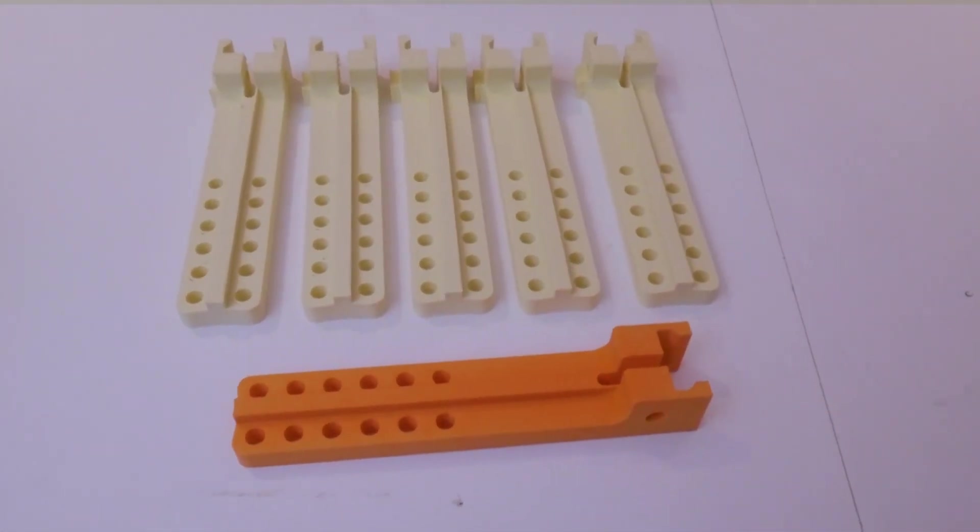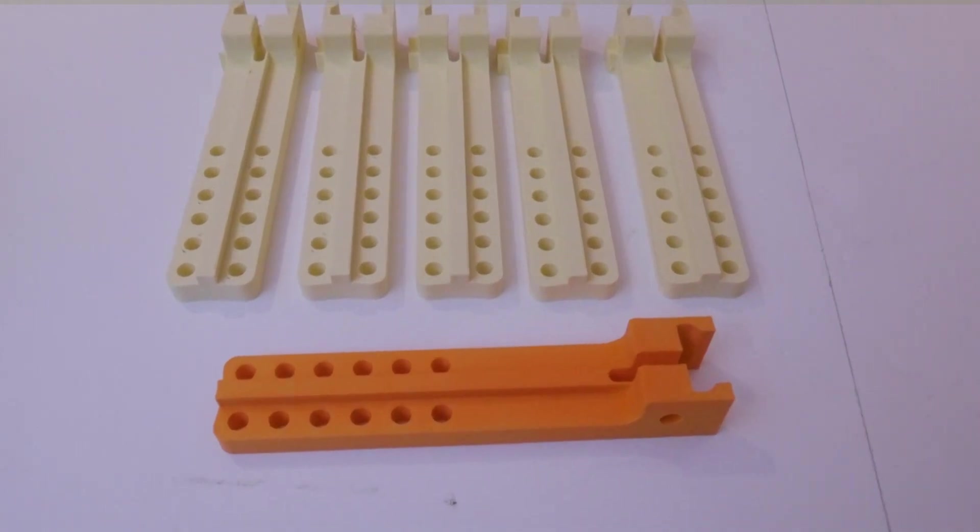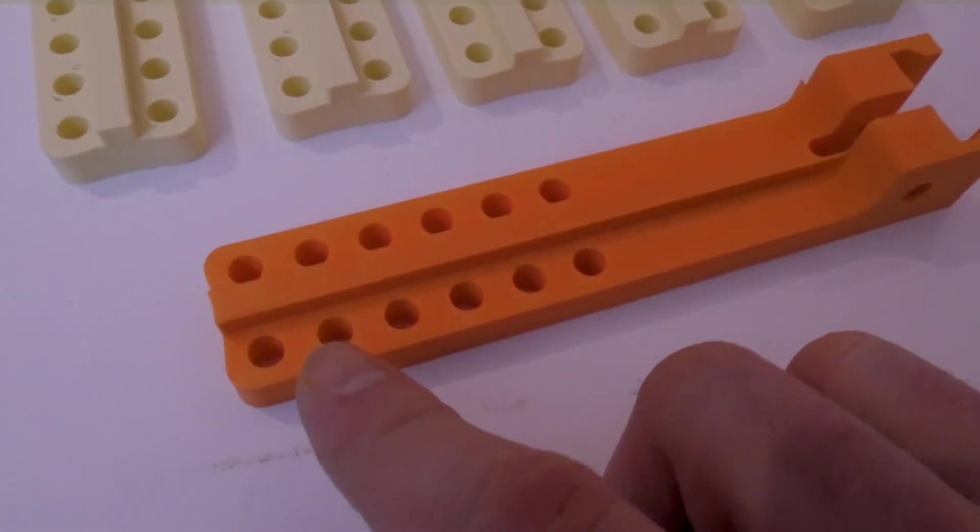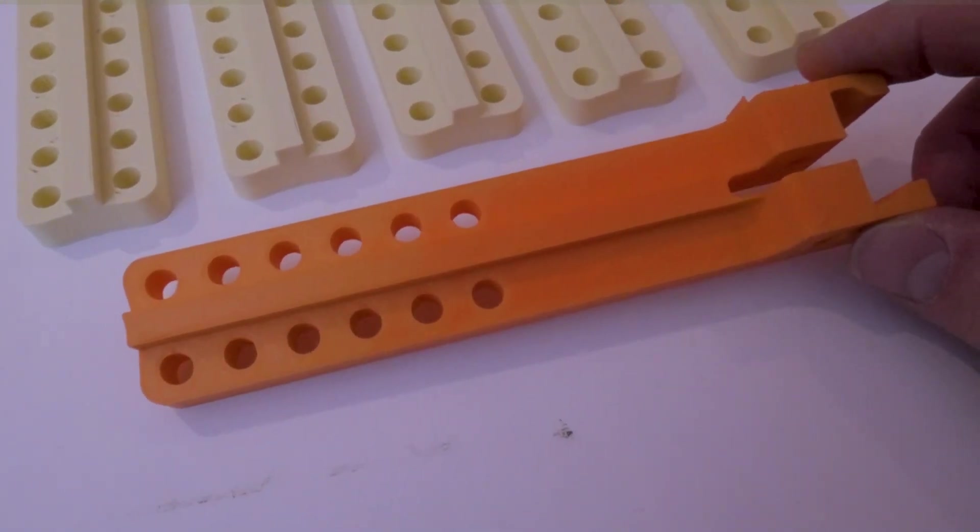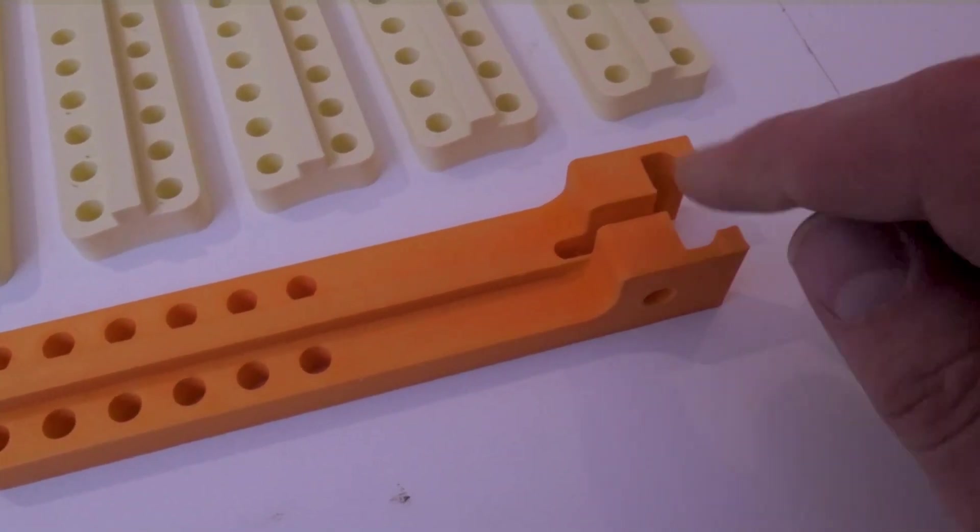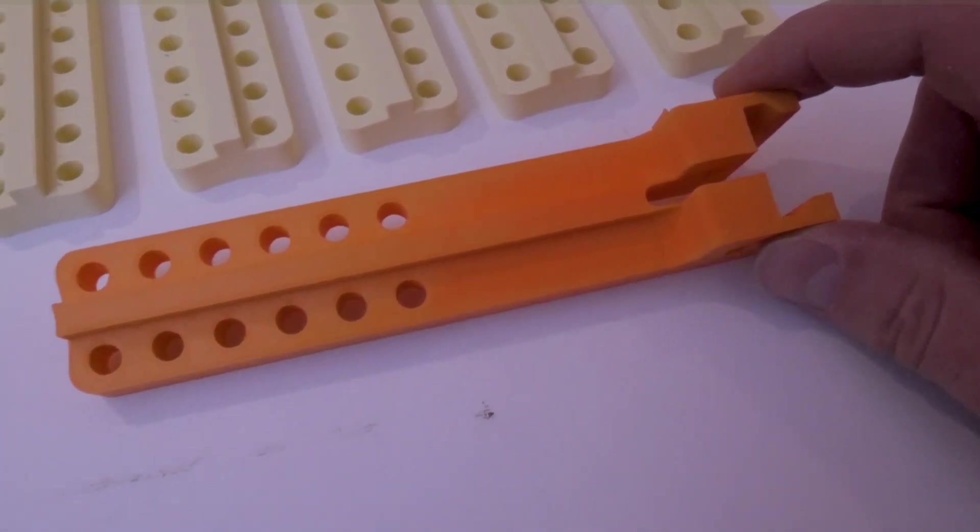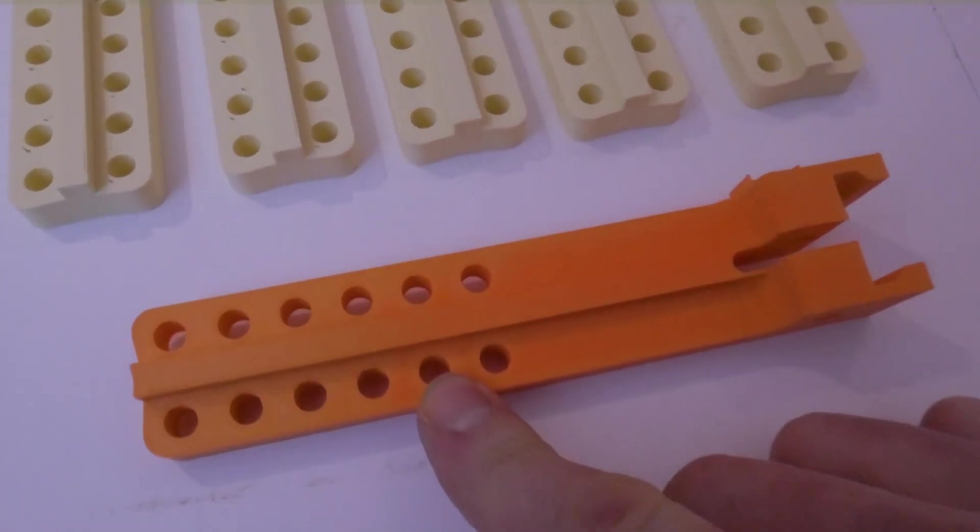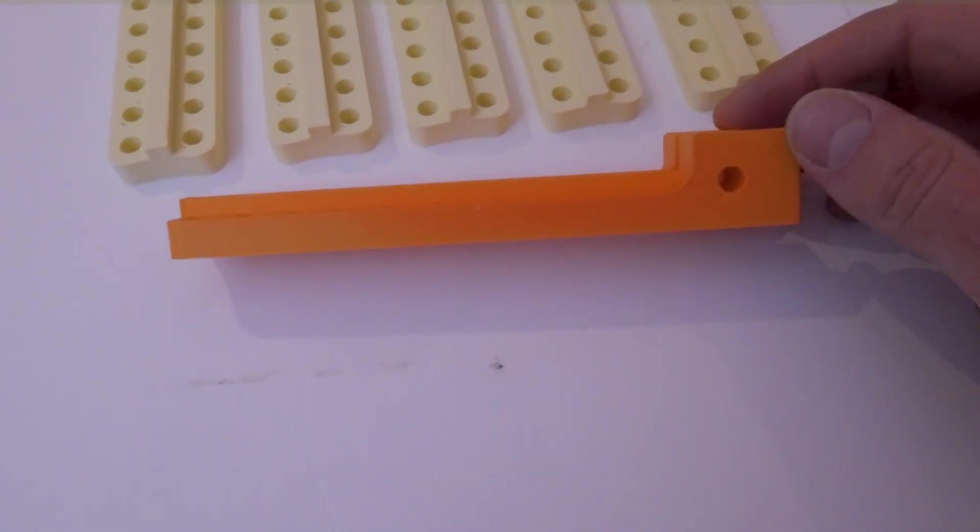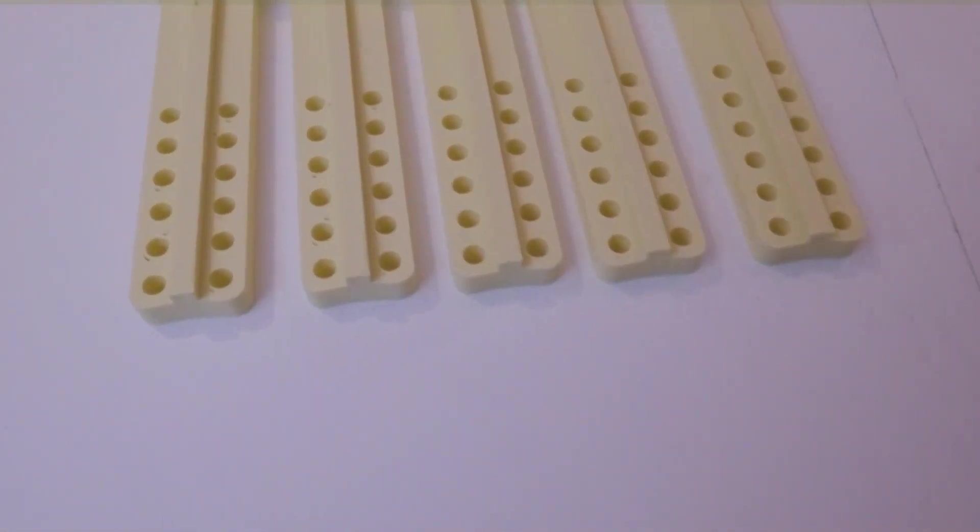This prompted me to switch back filaments to a regular PLA and do a sanity check print. You can see that in orange here. This print with the same settings, other than temperature, turned out great. There's only one very tiny area of under-extrusion, but the rest was perfect. So I figured it had to be something to do with the filament.